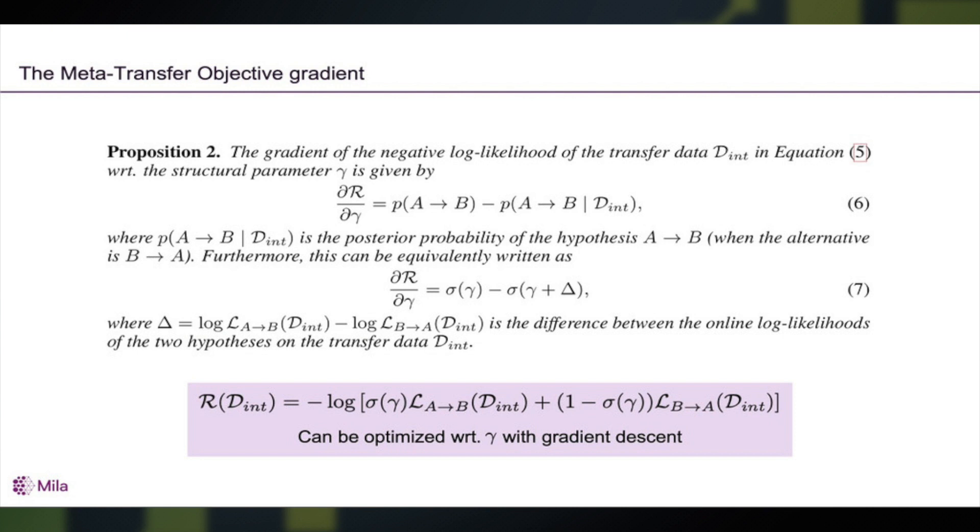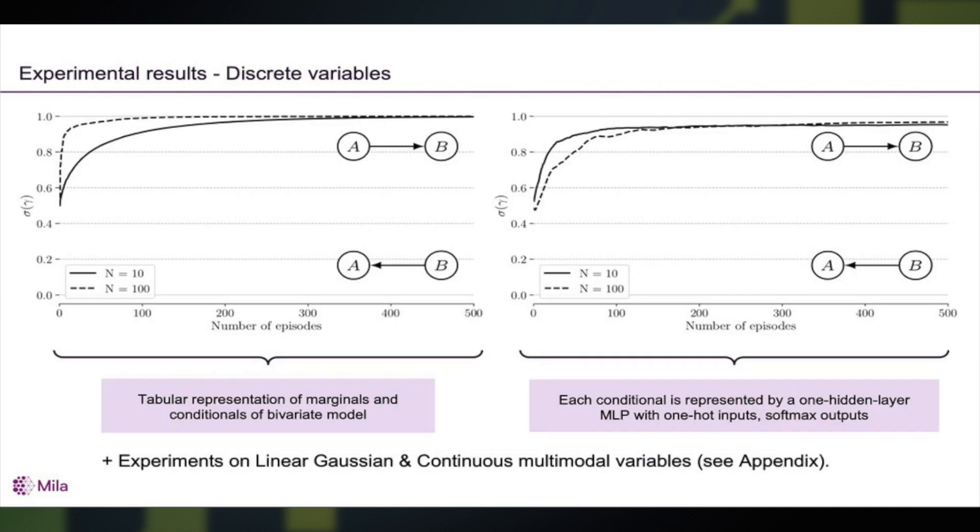We've done experiments to show that indeed using this meta-learning on the changes in distribution, we can recover the causal structure in a variety of settings from tabular representations to MLPs for the conditionals to using linear Gaussians to continuous multimodal non-Gaussian variables.